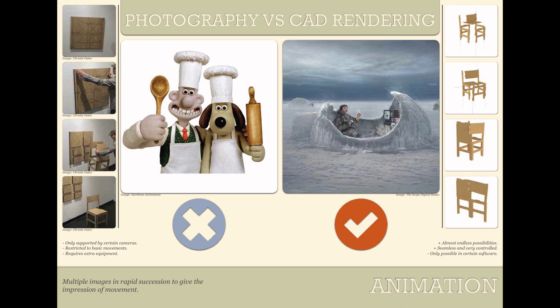The next category was animation — not video recording using a video camera, but individual images being combined together into an animation. Due to the fact that rendering isn't affected by gravity, and you can make your models do whatever you like without the risk of damaging them, it is very easy to set up a 3D model to be animated. Software like 3ds Max, Cinema 4D, and even SolidWorks supports basic animation, so this was an easy win for CAD rendering.